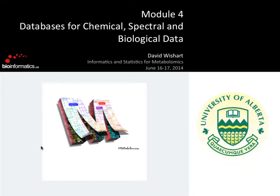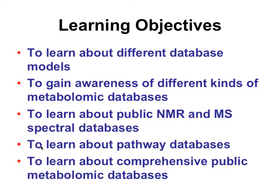This theme will go over and over again. Proteomics couldn't happen, genomics couldn't happen without their databases. So we're going to talk about the databases, the database models, the different types — spectral databases, pathway databases, and then public metabolomic databases.